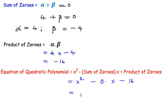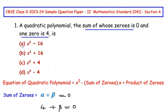Again, simplifying this, we get x squared and 0 times x is 0, so only negative 16 remains. So this is the equation of the quadratic polynomial and it is going to be option A. So A is our answer.